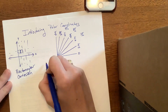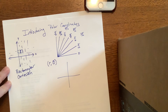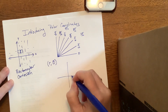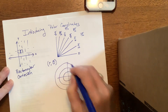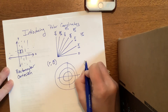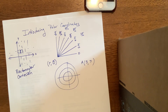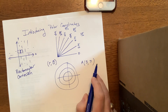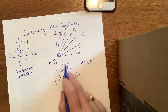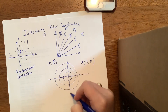We always write polar coordinates as an ordered pair r comma θ — radius first, then the angle. For example, let's say point A is the point (3, π). To graph it, we start with theta: π is over here on the left. Now we want a radius of 3, so we go 1, 2, 3 — and there is point A.